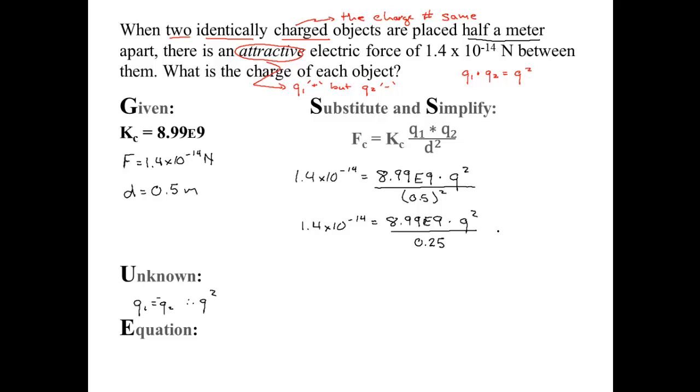Now I want that 0.25 out of the denominator, so I'm going to multiply the right by 0.25. But whatever I do to the right, I have to do the left. Now to simplify the left, 3.5 E negative 15 equals 8.99 E9 times Q squared.